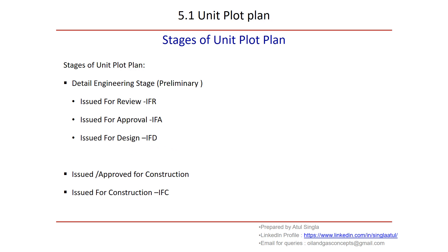It goes to all stakeholders like the client and PMC, and if they don't have any comments they provide their approval. Based on the 'Issue for Design,' we update our 3D model. When information gets more mature and we incorporate all comments, we issue it for construction. Sometimes at this stage we issue it for construction with some holds, taking approval from the client. Once all the holds are removed we issue the final version for construction, and site activities like actual foundation work and underground work start based on this document.